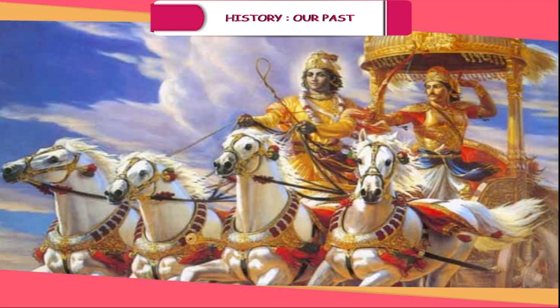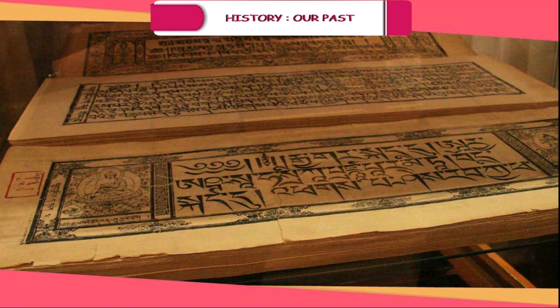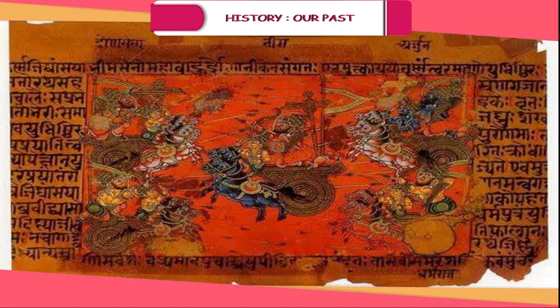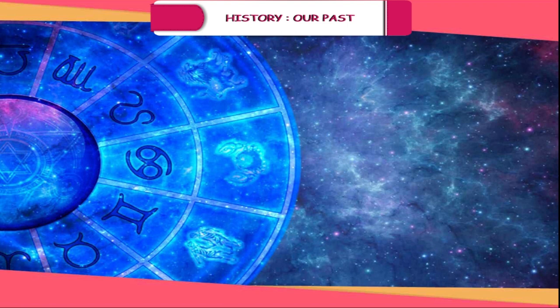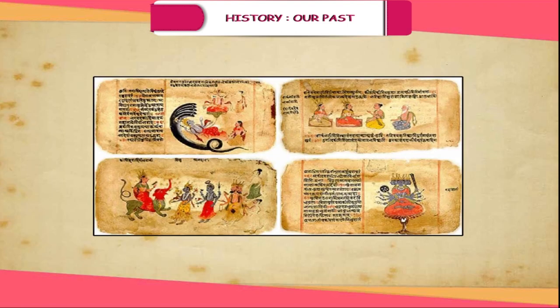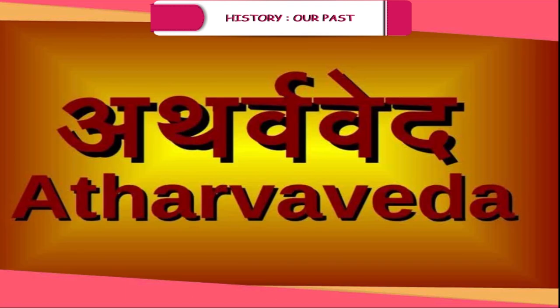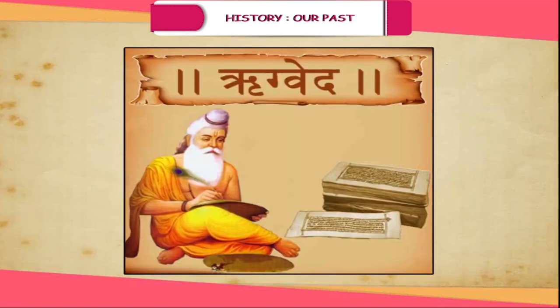The religious literature of India includes the Brahmanical literature, Buddhist and Jain sacred texts and epics. The earliest beliefs of the Vedic religion were grouped in four Vedas, namely Rig Veda, Yajur Veda, Sam Veda and Atharva Veda. The Rig Veda is the oldest work among the Brahmanical literature.